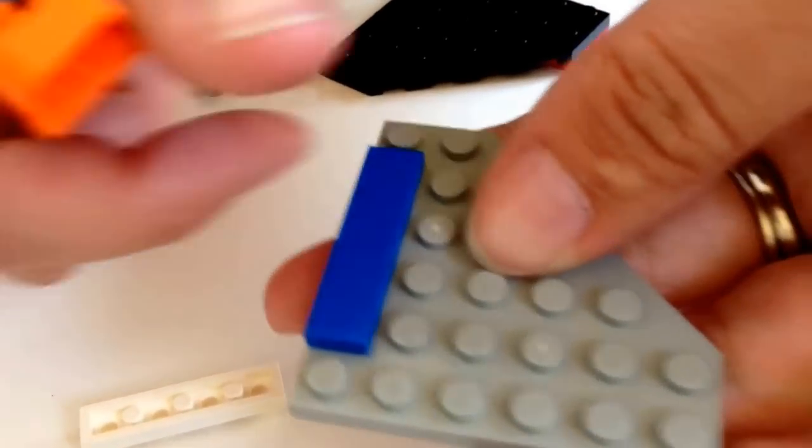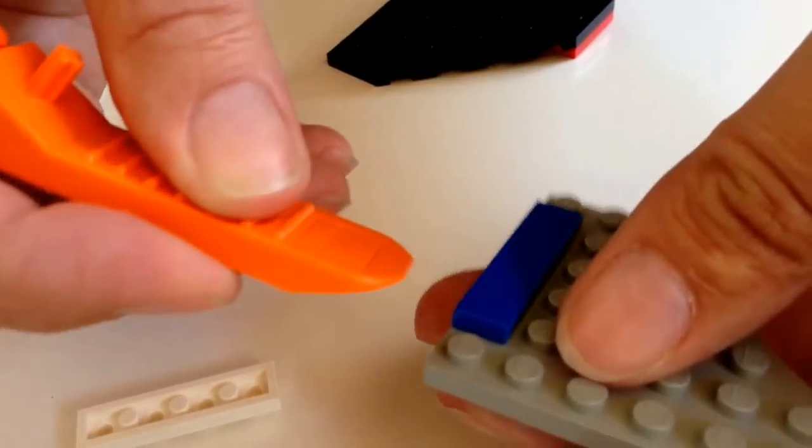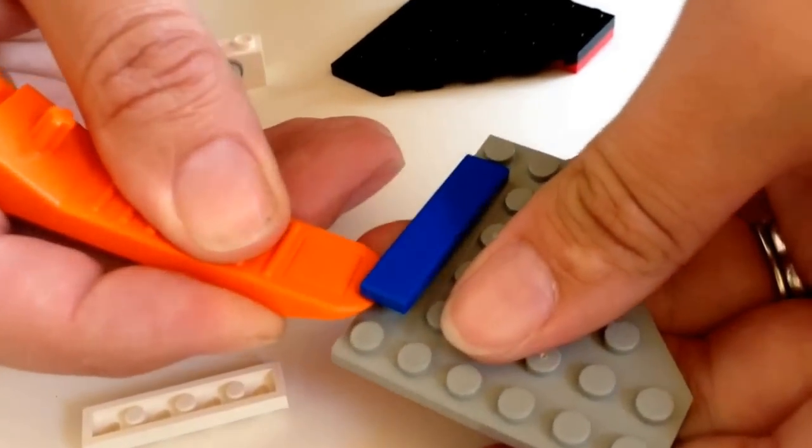If you have a piece like this that doesn't have any of the pips on top, you can use the other end of the Lego separator, just like you're probably using your fingernails right now, and just slide it under. It works way better and you don't chip your fingernails.